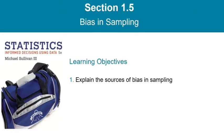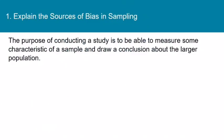Hello and welcome back. In this video, we'll be looking at section 1.5. We're going to talk about bias in sampling and explore some of the sources of bias in sampling. Remember from our previous sections, the purpose of conducting a study in statistics is to be able to measure some characteristic of a sample and use that to draw a conclusion about the larger population. It's almost never possible to measure every member of a population, but if we could measure a sample and use that to draw a conclusion about the population, that's the next best thing.